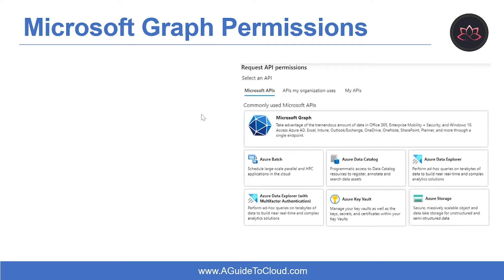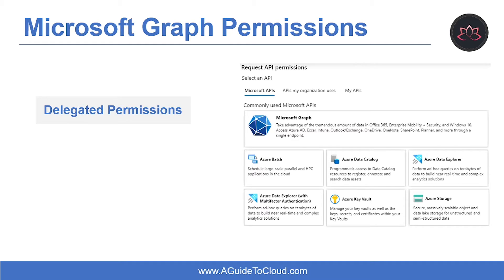Microsoft Graph exposes granular permissions that control the access that apps have to resources like users, groups, and mail. As a developer, you decide which permissions to request for Microsoft Graph. When a user signs in to your app, they — or in some cases an administrator — are given a chance to consent to these permissions. If the user consents, your app is given access to the resources and APIs it has requested. Microsoft Graph has two types of permissions: delegated permissions and application permissions. Delegated permissions are used by apps that have a signed-in user present, where either the user or an administrator consents, and the app can act as the signed-in user when making calls to Microsoft Graph.